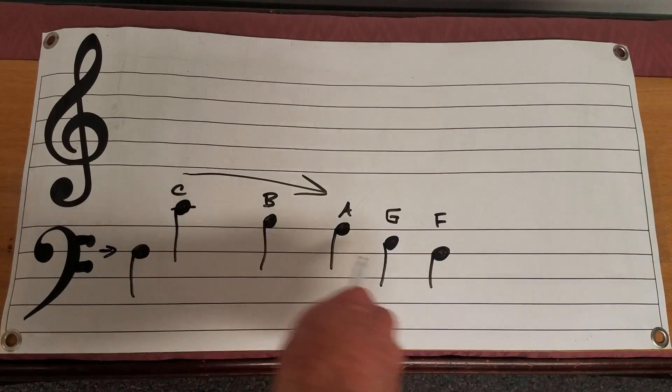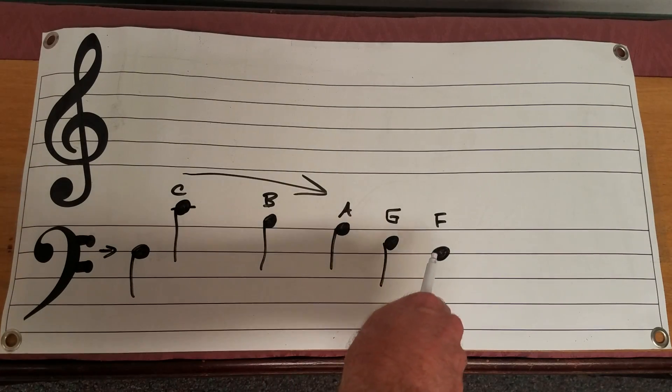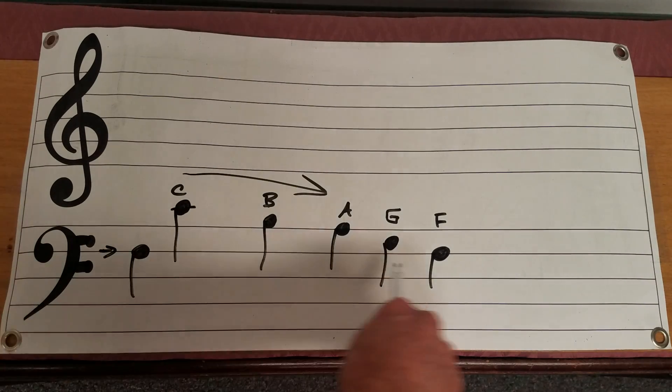So here is this scale line. C, B, A, G, F. Again always remembering the F is the clef itself. Clef meaning key, F.